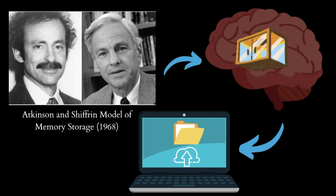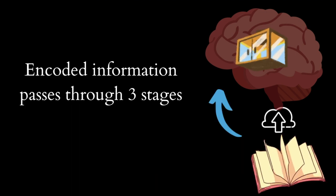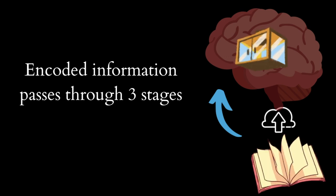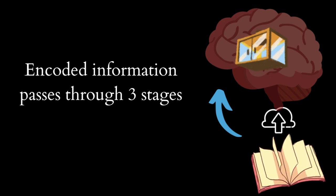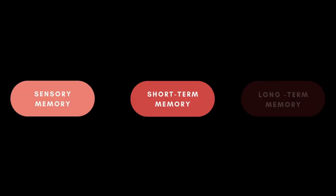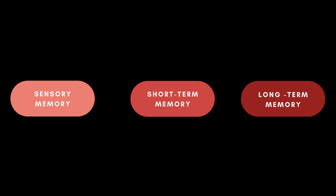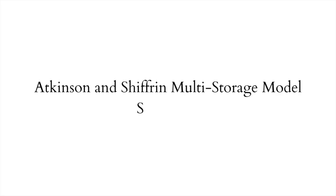Specifically, the Atkinson and Shiffrin model proposed that encoded information passes through three distinct stages with three different types of control processes. The three distinct stages are sensory memory, short-term memory, and long-term memory. Let's dive deeper into this model and understand how encoded information passes through these stages with the help of a box-and-arrow multi-store model schematic.